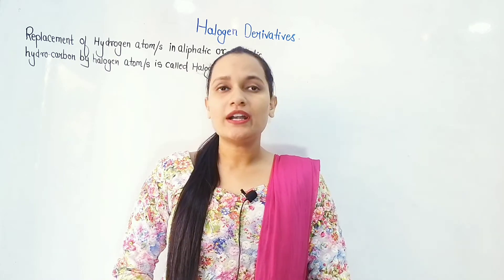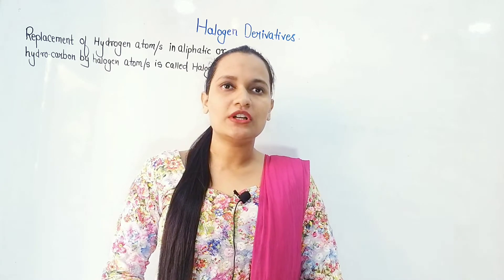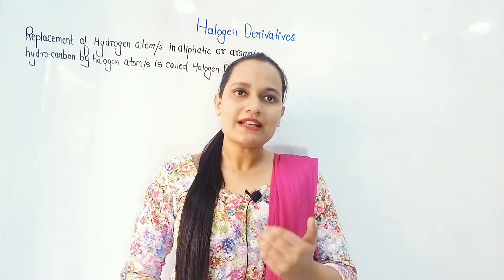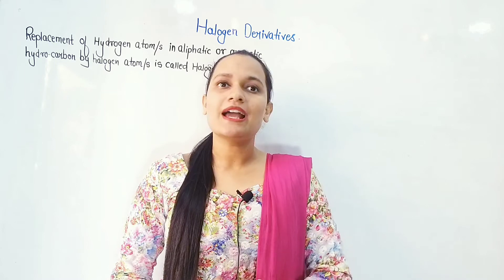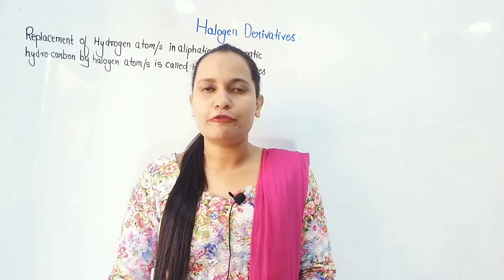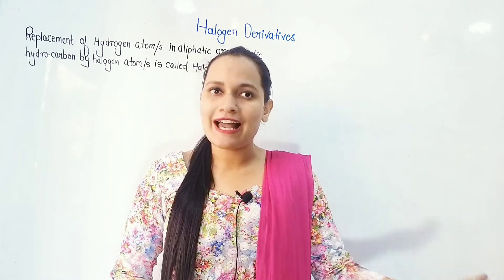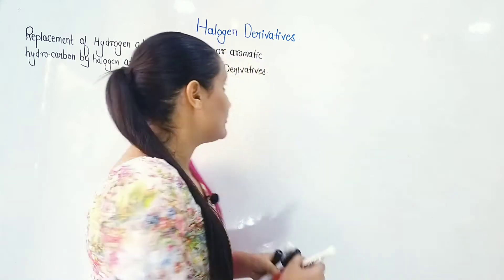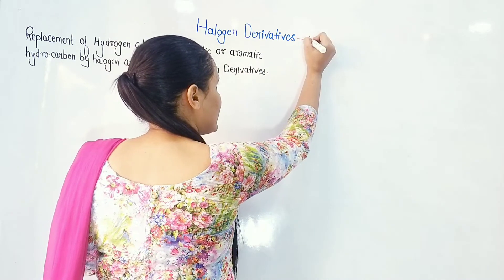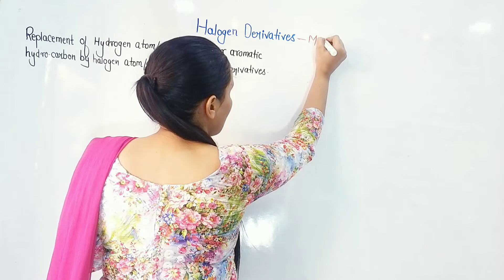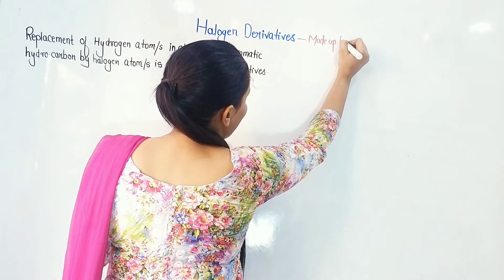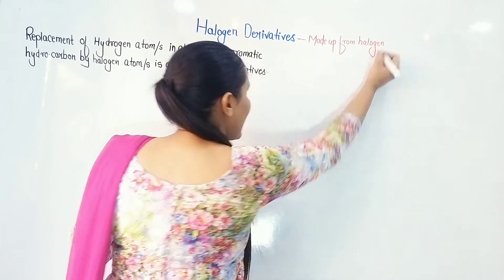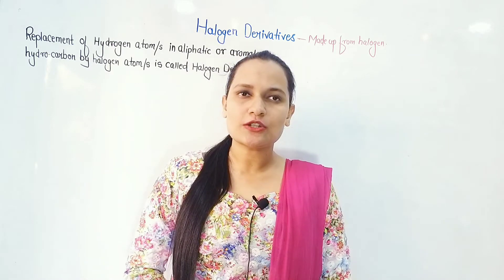Our chapter is known as halogen derivatives. What does this word mean? Halogen derivative means anything that is made up of halogen — things derived from halogen or made from halogen. So when I am talking about halogen derivative, it will be made up from halogen.